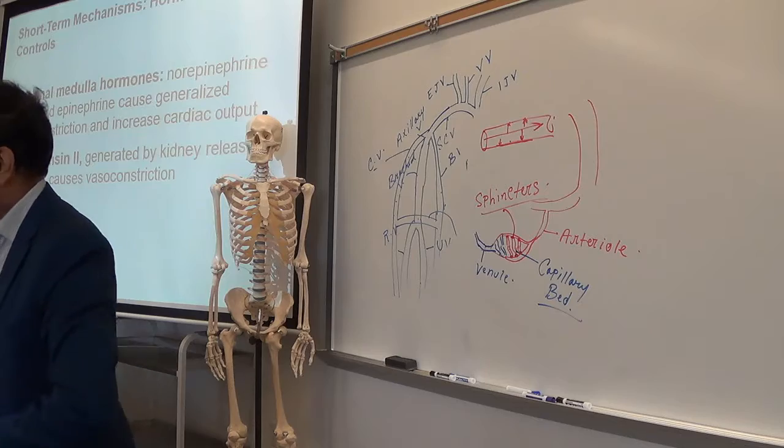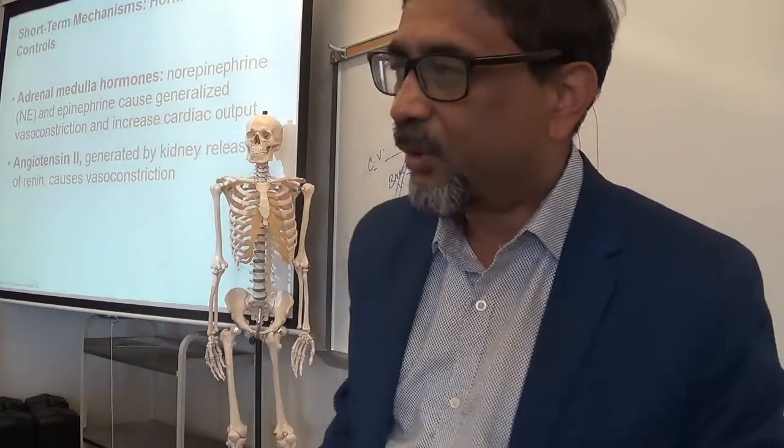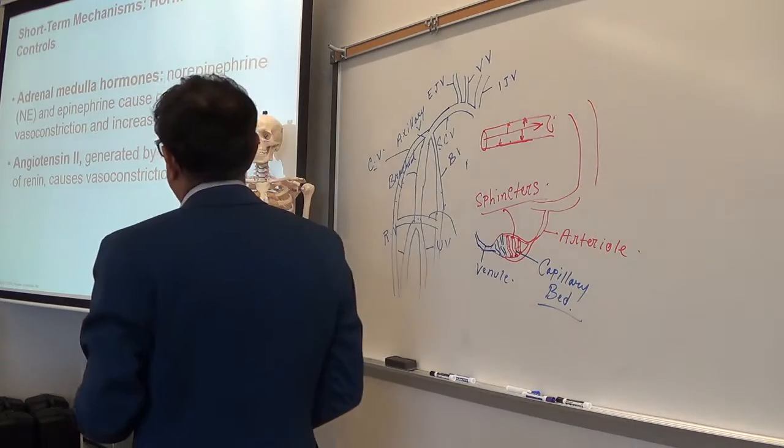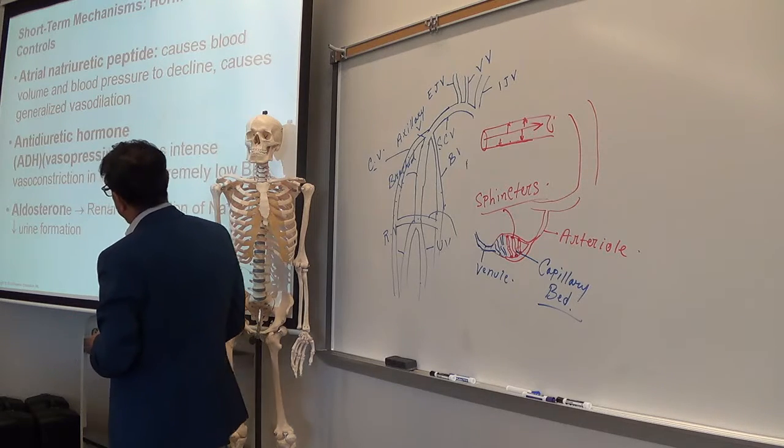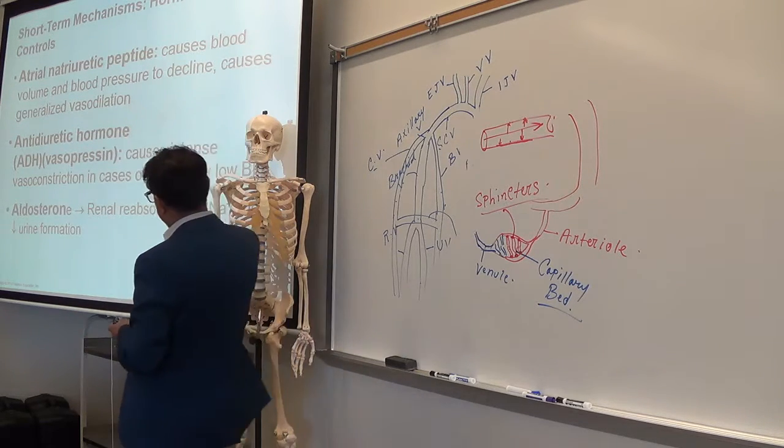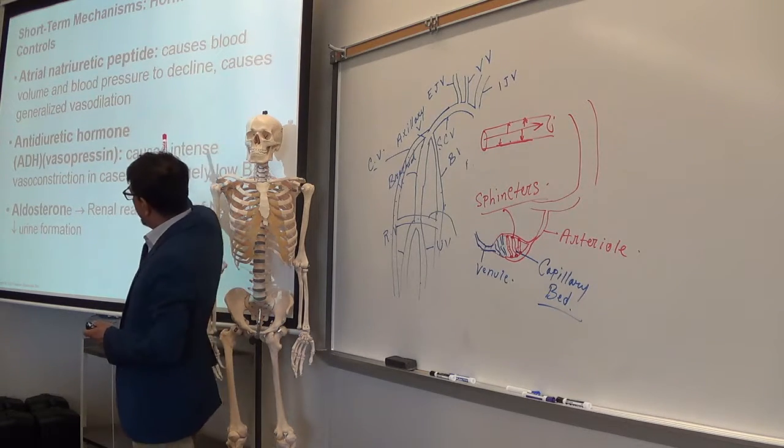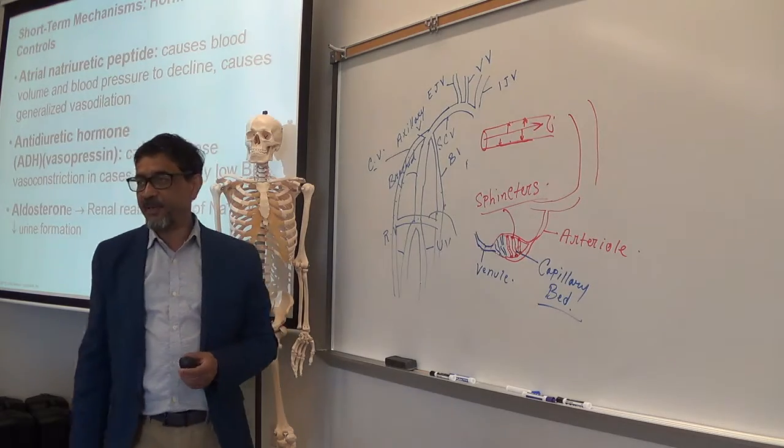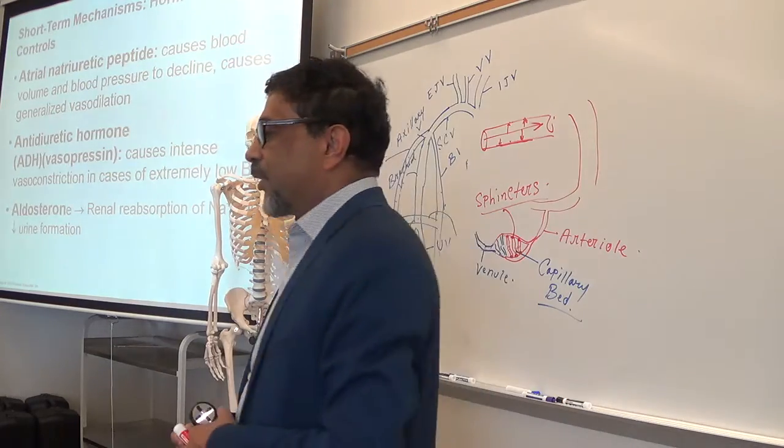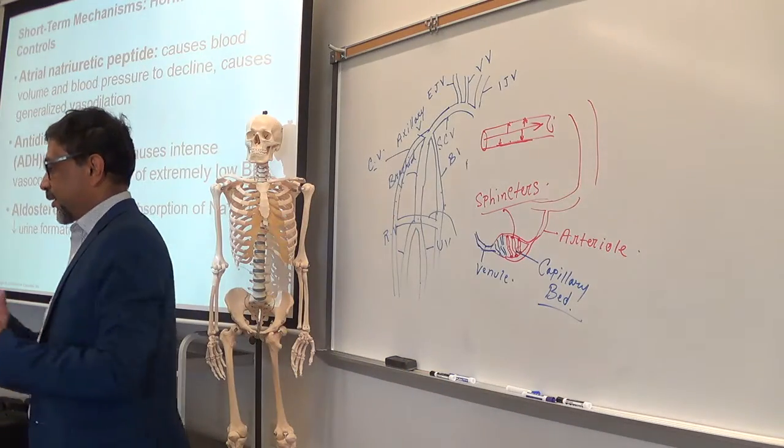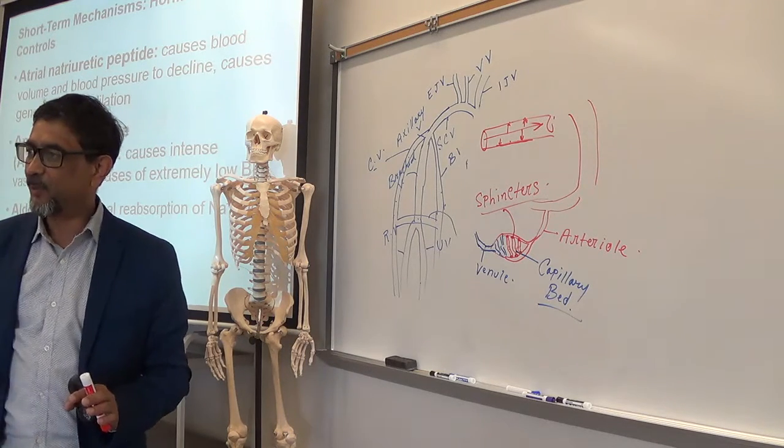Angiotensin 2 also stimulates the adrenal gland to release a hormone called aldosterone. Aldosterone comes from the adrenal gland. Antidiuretic hormone comes from the posterior pituitary. And antidiuretic hormone will preserve water by decreasing the volume of urine.